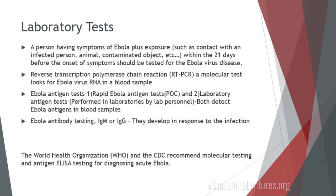A person who has symptoms of Ebola plus a possible exposure within 21 days before onset of symptoms should be tested for Ebola virus disease. The tests available include: a reverse transcriptase PCR — a molecular test that looks for the RNA of the Ebola virus (since Ebola is an RNA virus), available as a point-of-care test. There are also antigen tests — a point-of-care rapid antigen test and a laboratory antigen test — both of which detect antigens of Ebola in blood samples. A third test is an ELISA, which tests for antibodies that develop in response to infection.